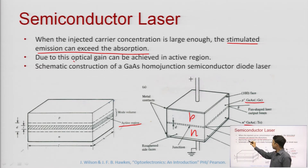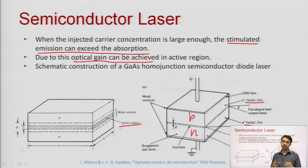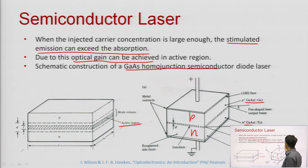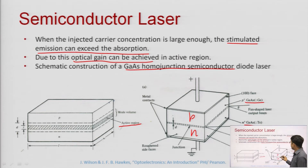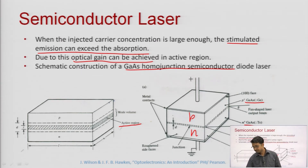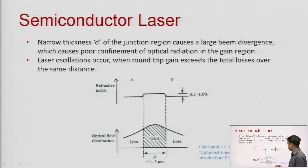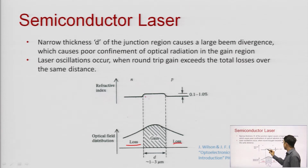Due to this, we can achieve optical gain in the active region, and due to this optical gain, more photons will be created. This is the construction of a gallium arsenide homo junction semiconductor diode laser — also called a diode laser. This is a homo junction. Homo junction lasers are less efficient in comparison to hetero junction lasers because you can see the distribution of the optical field — there is loss outside the junction region, and gain is only in the junction region.